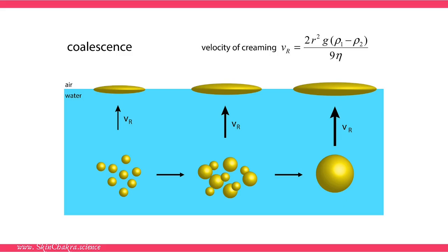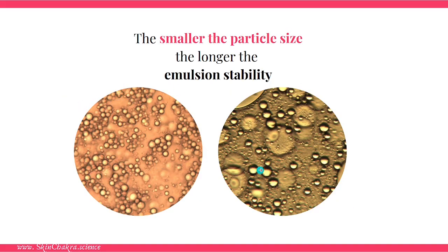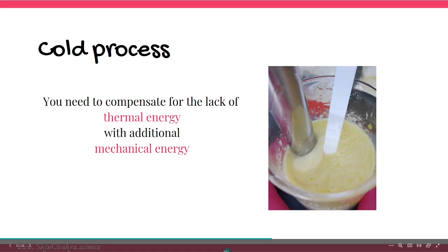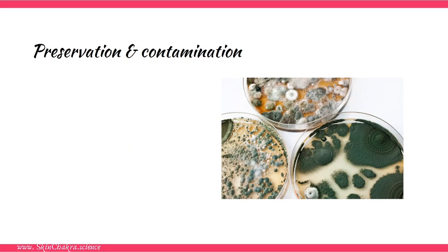Here you can see two microscopic views of two emulsions. The left one has much smaller particles and is obviously much more stable. The right one has much bigger particles that have already coalesced, making the emulsion less stable with a shorter shelf life. Our aim is to create emulsions with smaller, more uniform particles. This brings us back to the point that in cold process, you need higher shear and slightly longer homogenization time to achieve that uniformity.